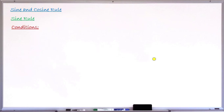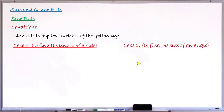Conditions for using the sine rule: the sine rule can be used in either of the following cases. Case one — if you want to find the length of a side of a particular triangle, there are basic details that you must see in the triangle. Case two — if you want to find the size of a particular angle in your triangle, there must be some details that must be there before you apply the sine rule. Let us see what details you must have in each of these cases.